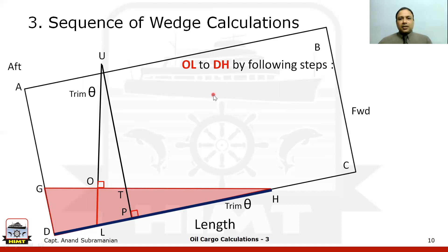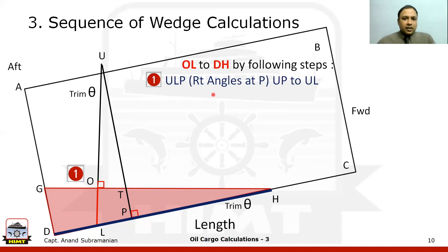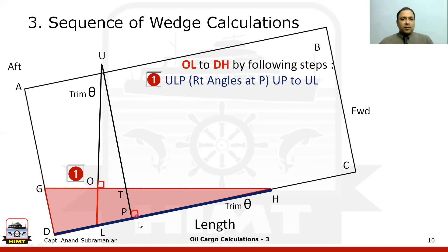This is the sequence of the wedge calculations — our story from OL to DH. The first step involves the triangle ULP, which is right-angled at P. From the value UP — which is the height of the tank plus the height of the ullage pipe — and knowing the trim theta, we can find out the distance UL. Remember, UL is not equal to UP because it forms an angle due to the trim of the tank.